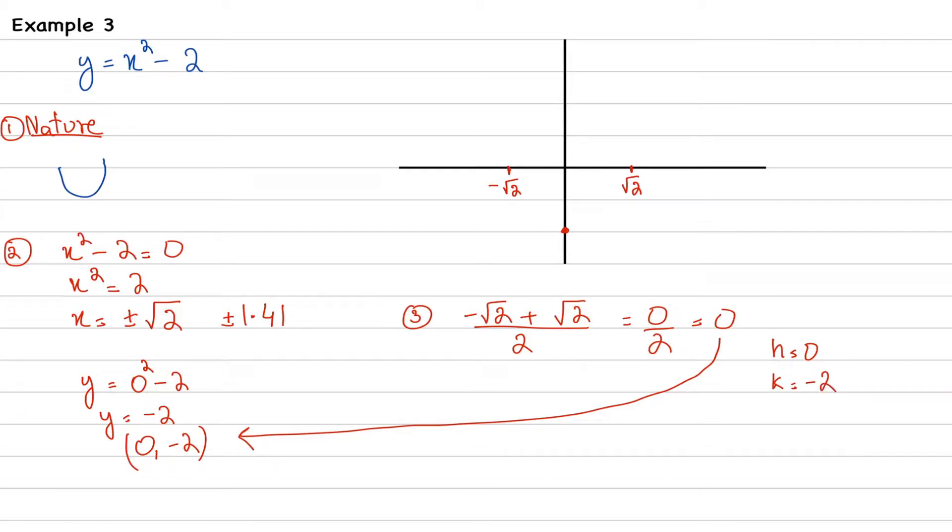So this means our turning point and the y-intercept are the same. It means wherever it turns, it will cut the y-intercept on the same point. So our turning point is equal to 0, minus 2.